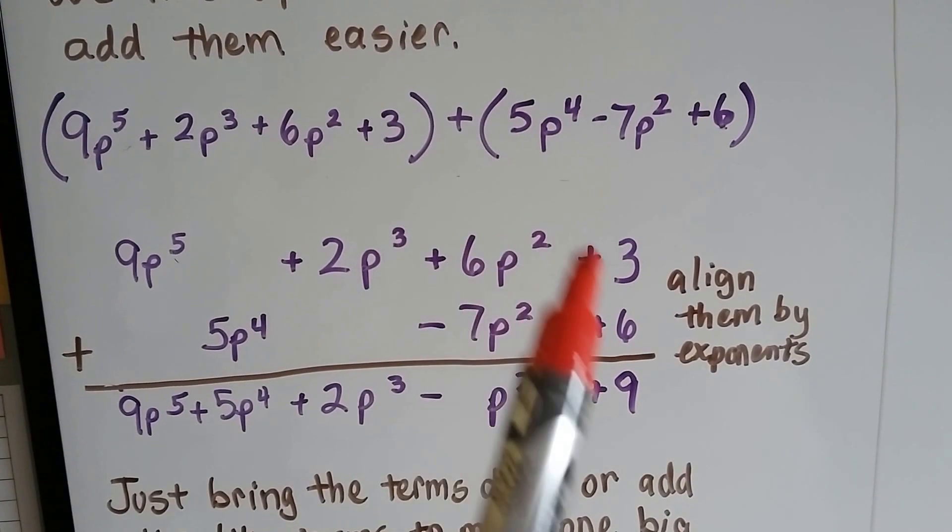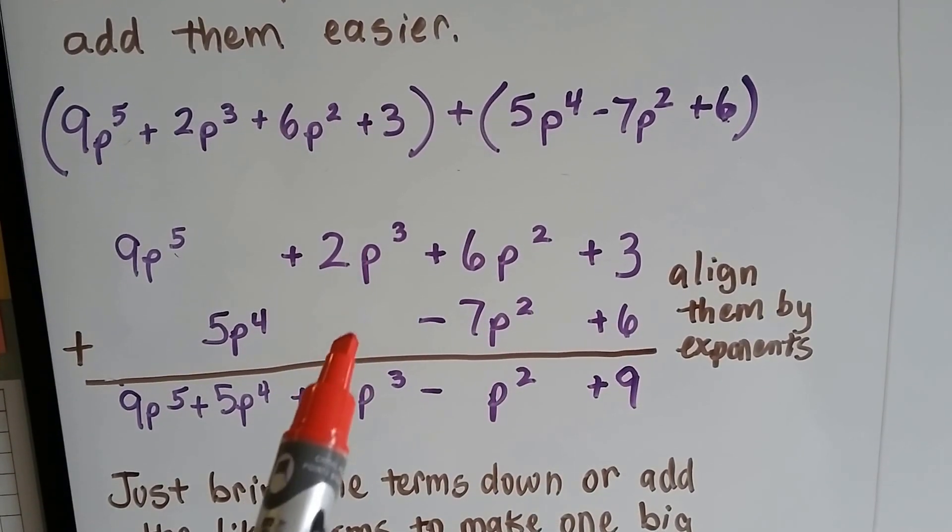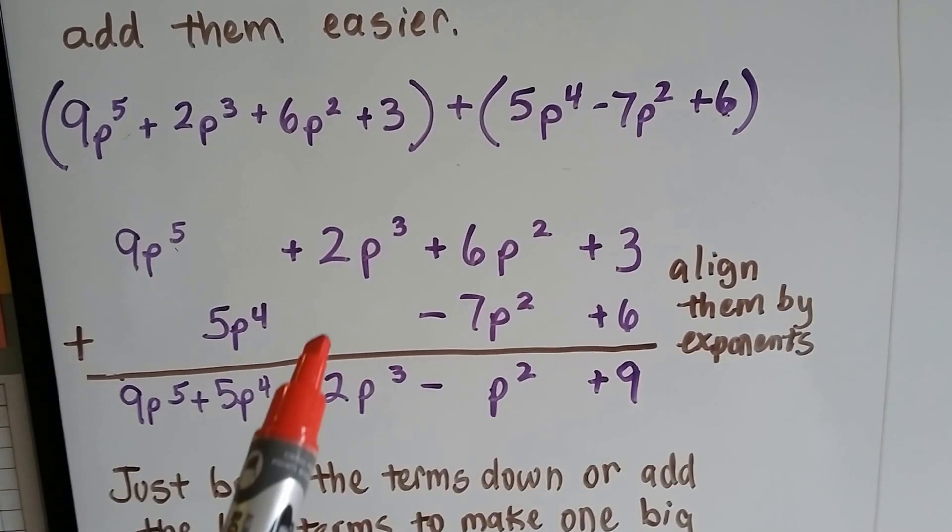Then we go with the 2p to the third power. That's where this one sits. This one doesn't have a p to the third power, so we leave it blank.